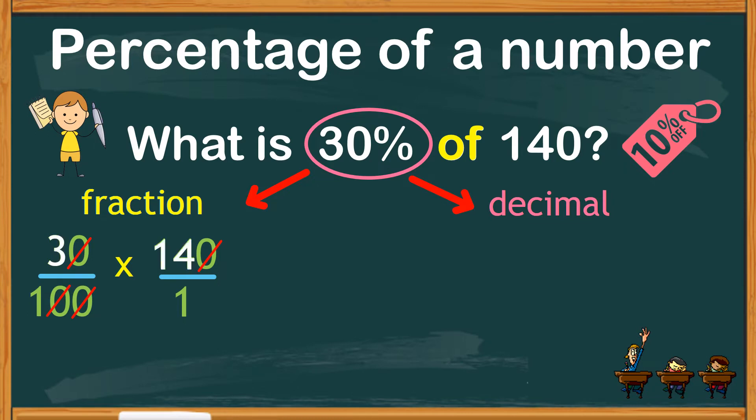Thereby, when multiplied, we get a product of 42. So for our answer, 30% of 140 is 42.